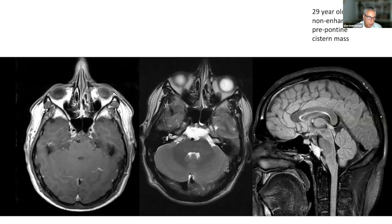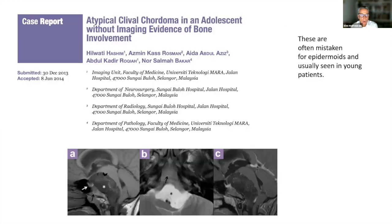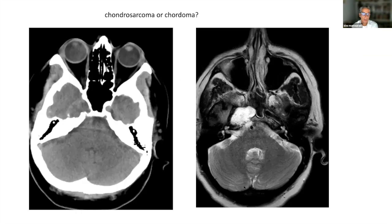This is a different patient with a pre-pontine mass — high signal intensity on the T2-weighted scan, non-enhancing — which also proved to be a chordoma. And here is a chordoma without any clival involvement but with some enhancement. So to summarize: whenever you see a bony destructive lesion in the midline with T2 prolongation and enhancement, lead with chordoma. The other consideration when it is off-midline with T2 prolongation is chondrosarcoma.